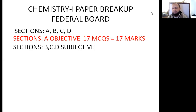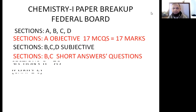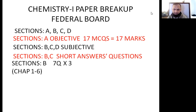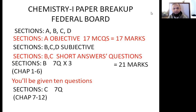Sections B, C, and D are subjective. Section B is for short answer questions and it comes from the first half of your book, that is from chapter number one to chapter number six. You will have to attempt seven questions and one question is of three marks, so overall this section is 21 marks. You will be given ten questions, so three questions will be extra.